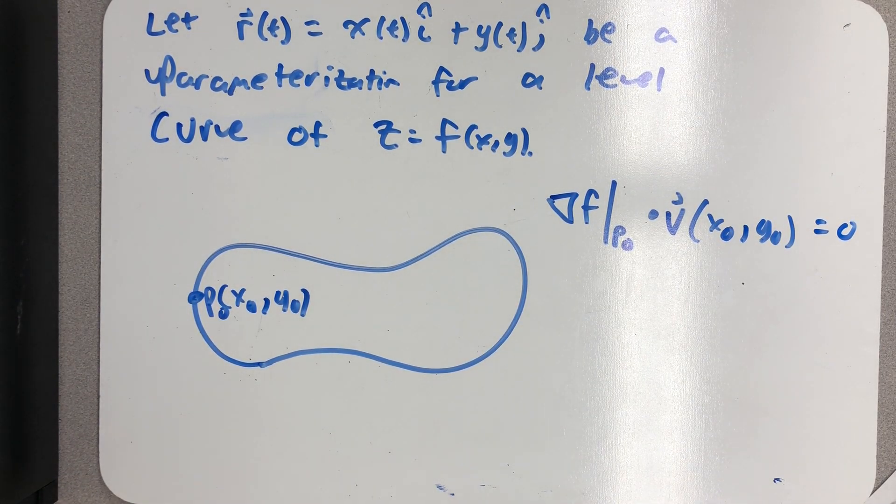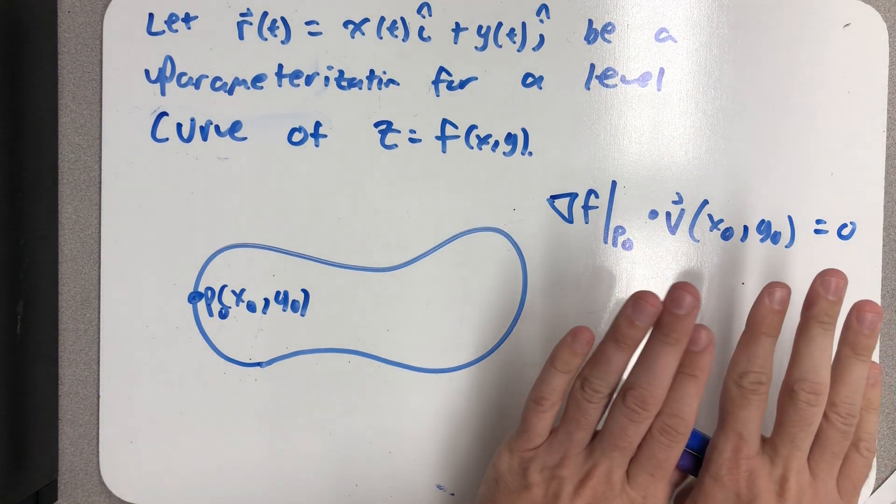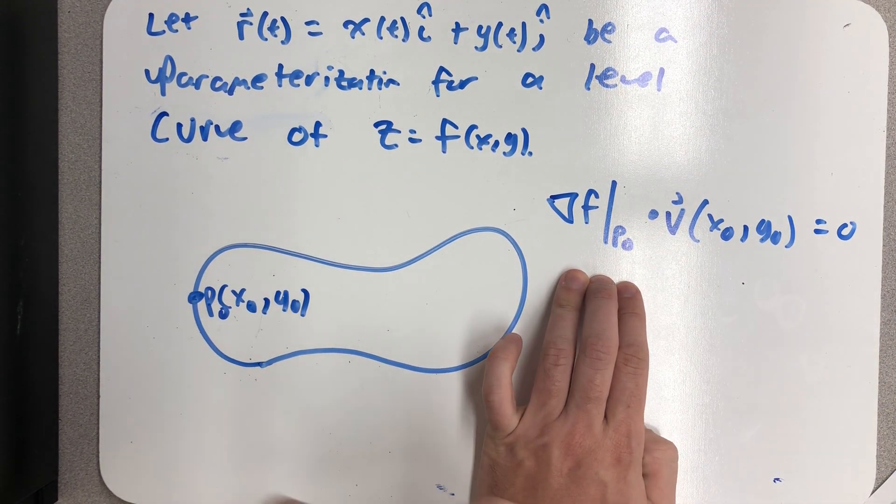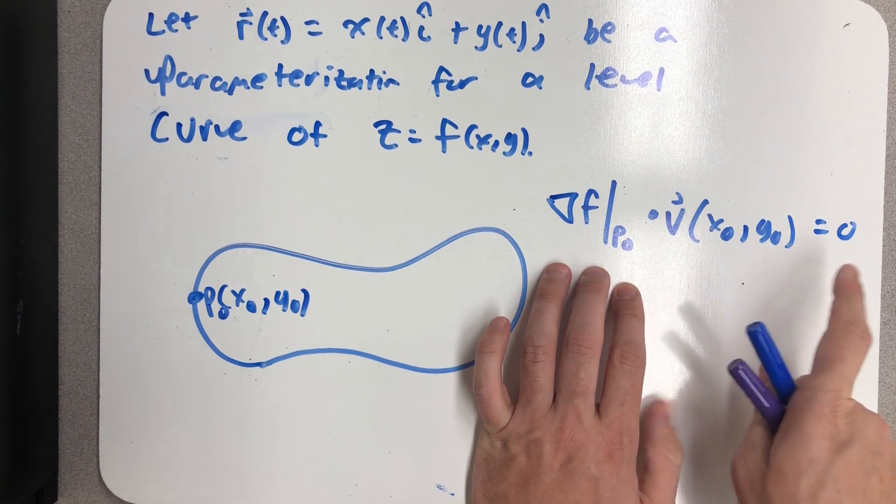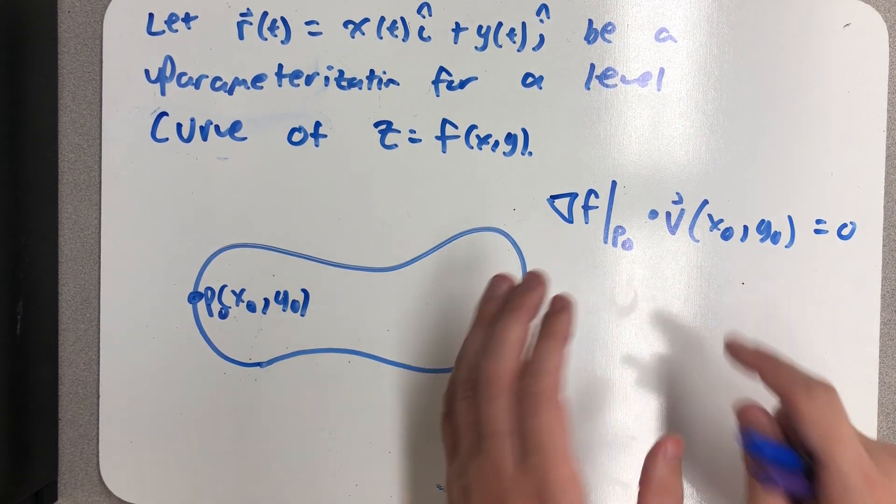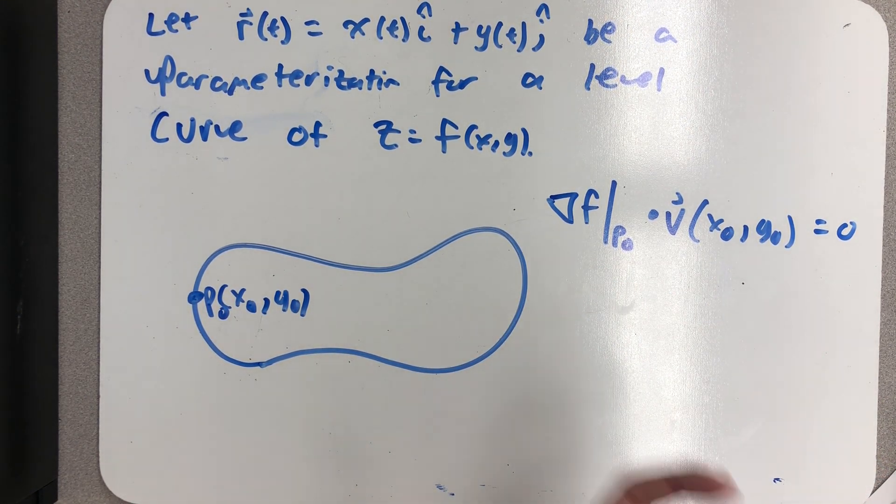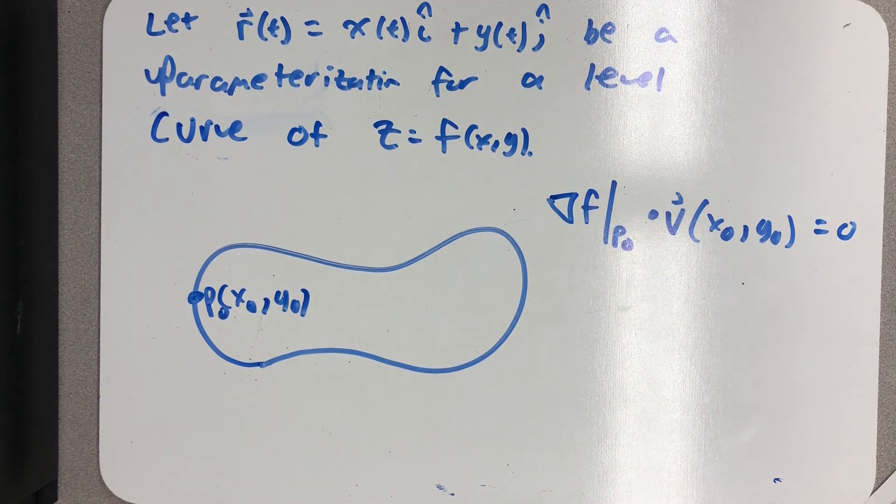Let r of t be a parameterization for a level curve of z equals f of xy. In our last video, we learned that the gradient at a point on that level curve was orthogonal, had a dot product of zero with the velocity vector, or another way to think of that is to say the direction of motion.